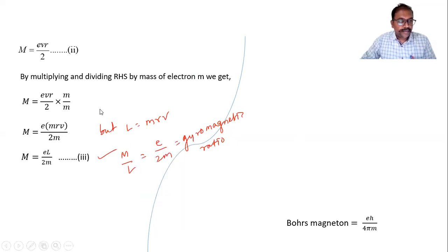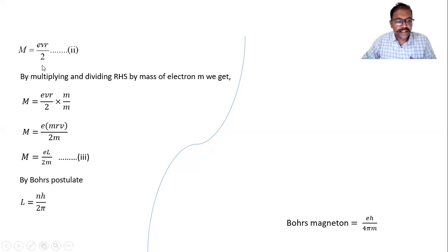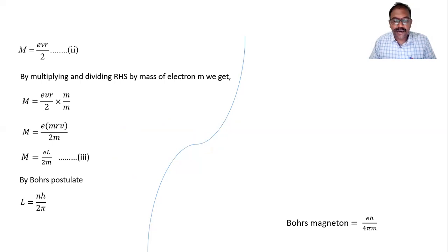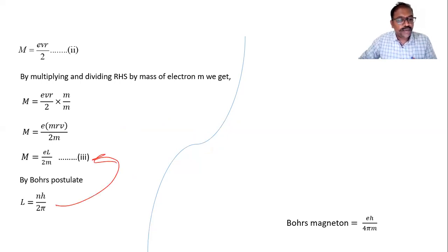Now, by Bohr's postulate, angular momentum is an integral multiple of h/(2π), so L = nh/(2π). We substitute this expression for L into the formula M = eL/(2m).